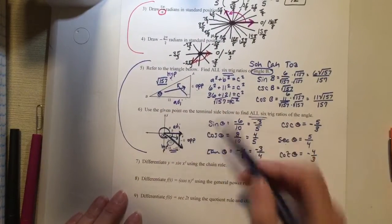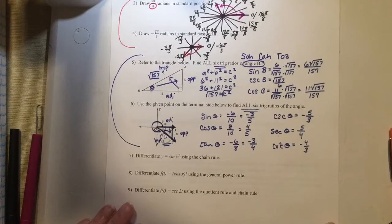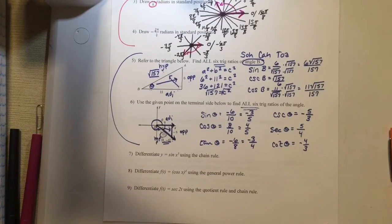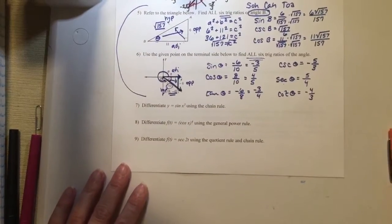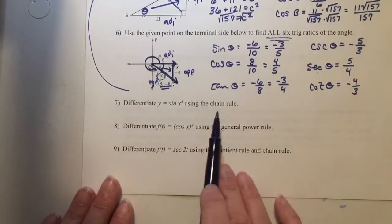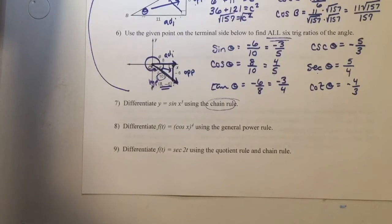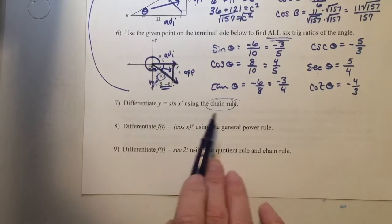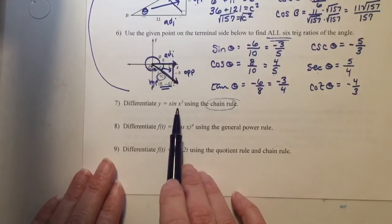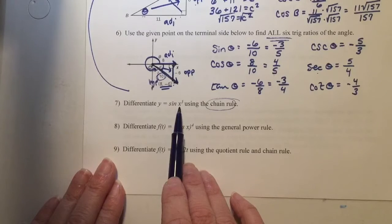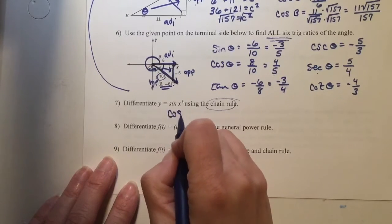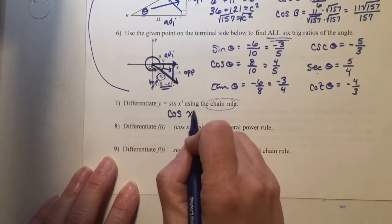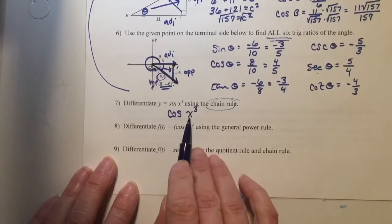So we have all six trig functions. These two questions go with the same idea — can you use right triangle trigonometry to find all six trig functions? Now we're going to go to some derivatives. For number seven you are finding the derivative using the chain rule. The reason why it's a chain rule is because you have the sine of something that's more than just a single variable. The derivative of a sine is a cosine. When you take the derivative, you always leave the original function the same — you're going to keep that x cubed.